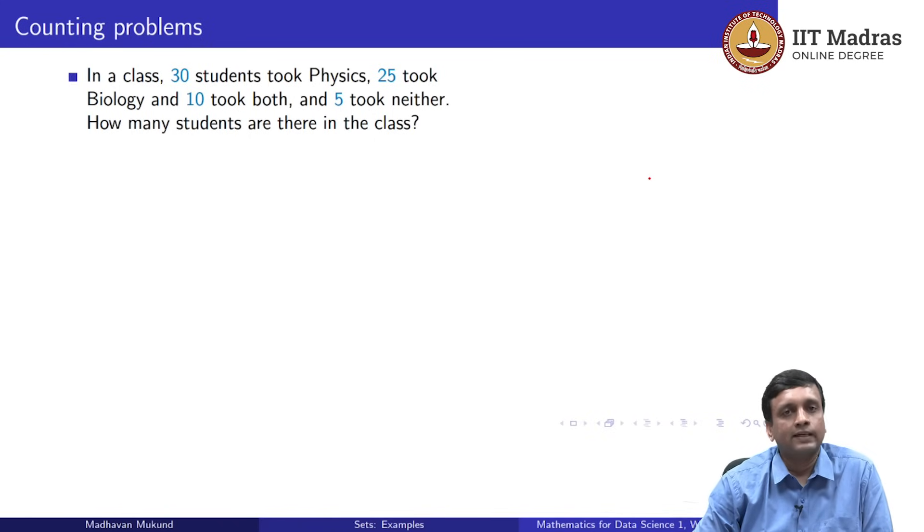These are the facts that are given to you. There are 30 students taking physics, 25 taking biology, 10 take both, 5 take neither. The question is how many students are there in the class.